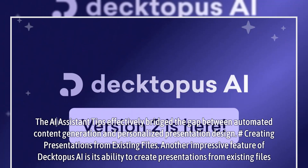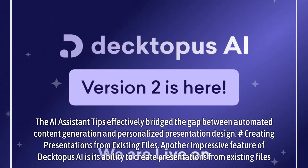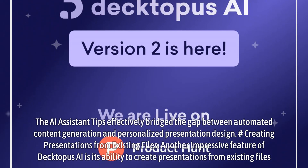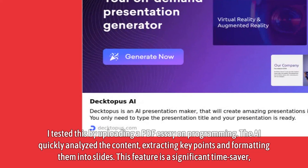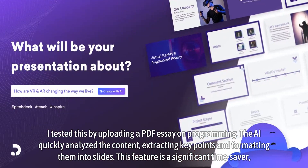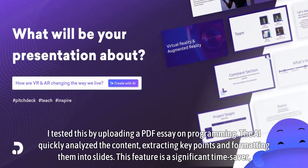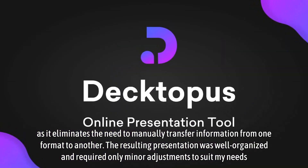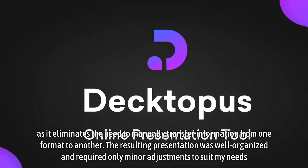Creating Presentations from Existing Files: Another impressive feature of Dectopus AI is its ability to create presentations from existing files. I tested this by uploading a PDF essay on programming. The AI quickly analyzed the content, extracting key points and formatting them into slides. This feature is a significant time saver, as it eliminates the need to manually transfer information from one format to another. The resulting presentation was well organized and required only minor adjustments to suit my needs.